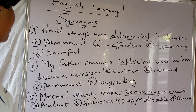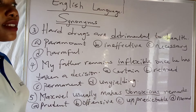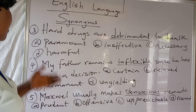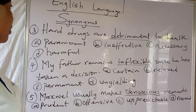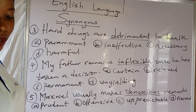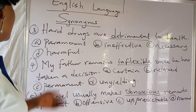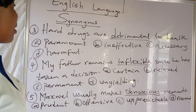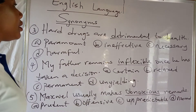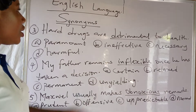Other examples of synonyms as usually asked in exam questions: number three — how drugs are detrimental to health. When something is detrimental, it means something that causes harm or that can damage. The options are: paramount, ineffective, necessary, and lastly, harmful.